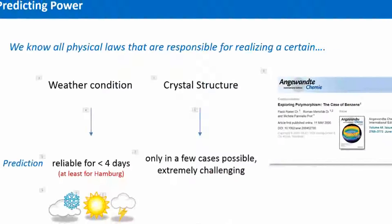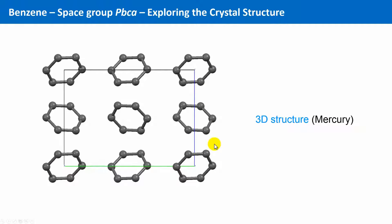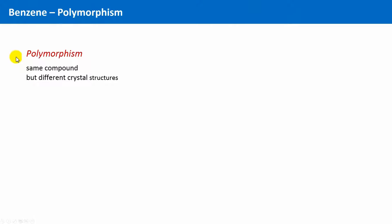Okay, that should it be for now concerning this particular crystal structure. But additionally, I would like to take the example of benzene to bring another feature of crystal structures to your attention. This is polymorphism.